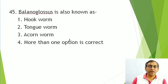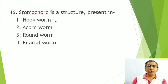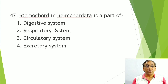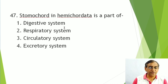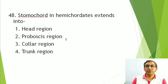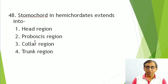Balanoglossus is also known as tongue worm and acorn worm — more than one option can be correct. The stomochord (buccal diverticulum) is part of the digestive system. In hemichordates, the stomochord extends into the proboscis region. Examples of Hemichordata: Balanoglossus and Saccoglossus.